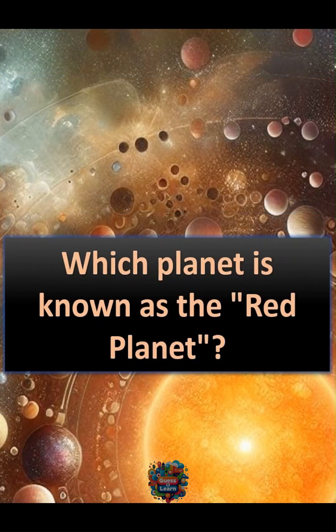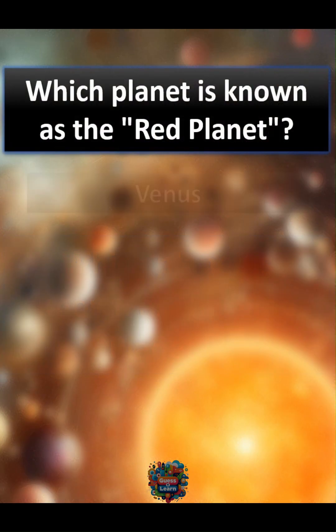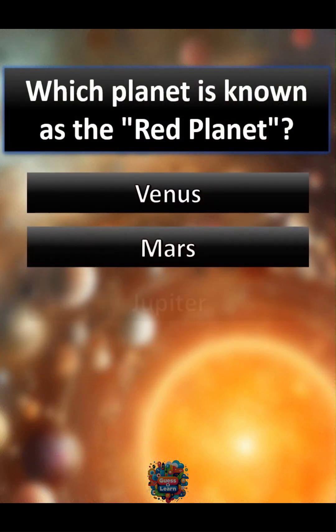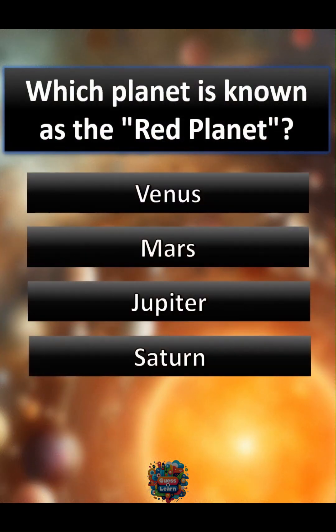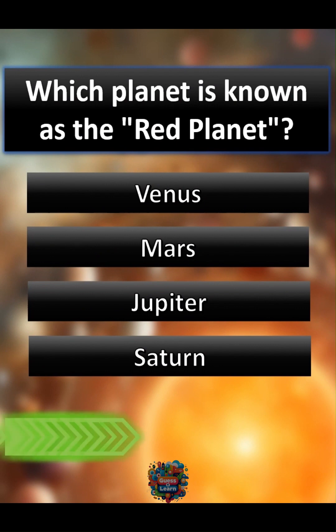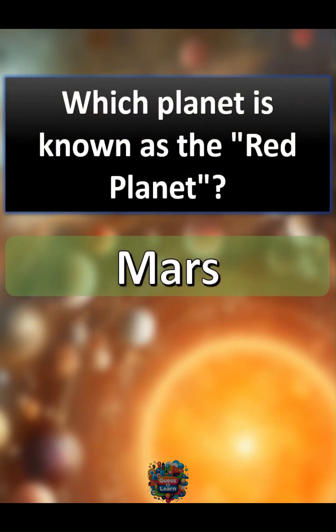Which planet is known as the red planet? A Venus, B Mars, C Jupiter, D Saturn. Correct answer: B Mars.